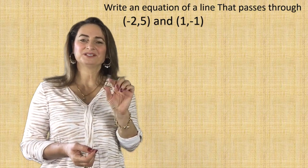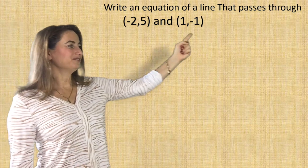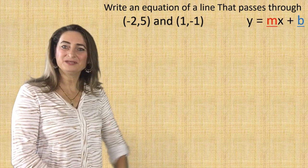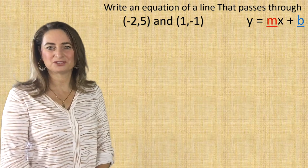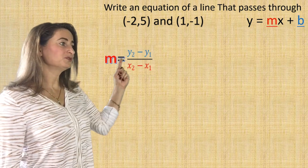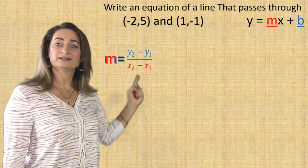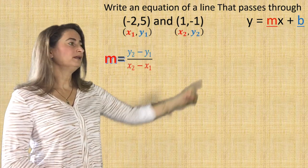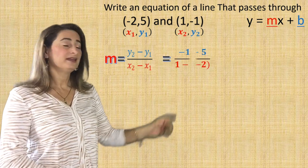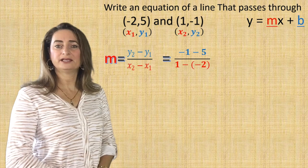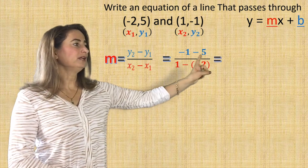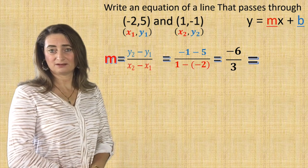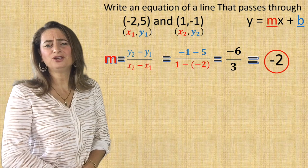Now let's complicate the problem just a little. Write an equation of a line that passes through (negative 2, 5) and (1, negative 1). Again, the slope-intercept form is y equals mx plus b. To find the slope, I don't have a graph, so I'll use y2 minus y1 over x2 minus x1. Name the coordinates: first is x1, y1; second is x2, y2. Substitute: negative 1 minus 5 over 1 minus negative 2. Negative 1 minus 5 is negative 6, and subtracting a negative is adding, so 1 plus 2 equals 3. Negative 6 divided by 3 equals negative 2 — so this is a negative slope going down.